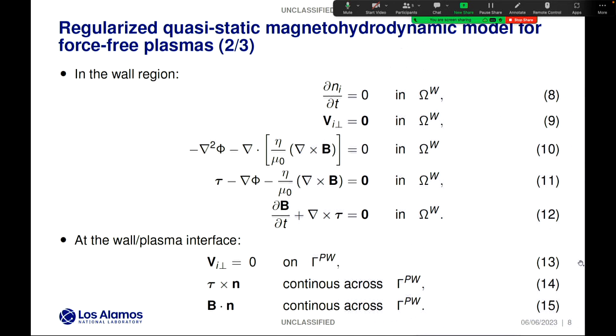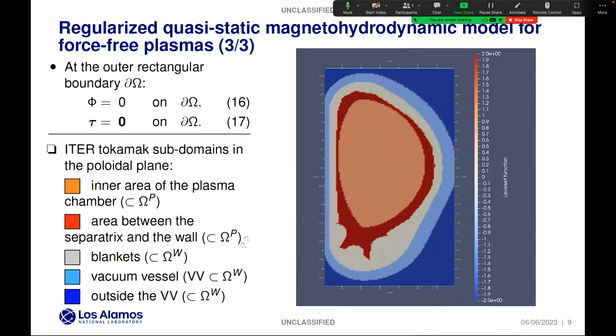Here we have the jump conditions 13, 14, and 15, which should be naturally satisfied along the wall and plasma interface. They express that the ion flow, the tangential components of the tau field, and the normal components of the magnetic field are continuous across this interface. Finally, at the outer boundary, we have equations 16 and 17 that ensure the electric field is zero.